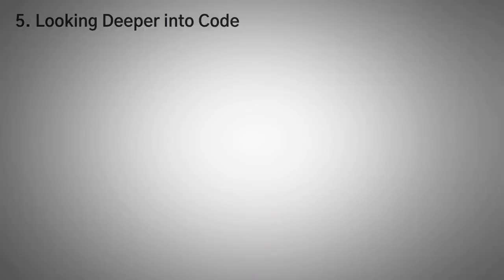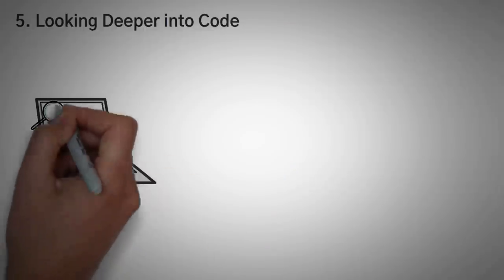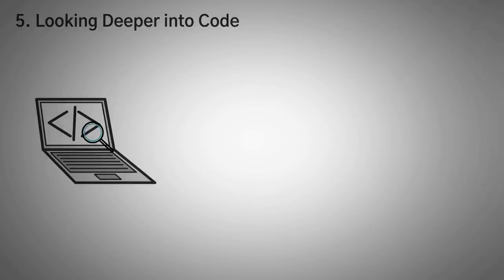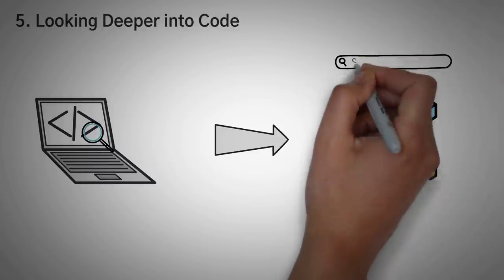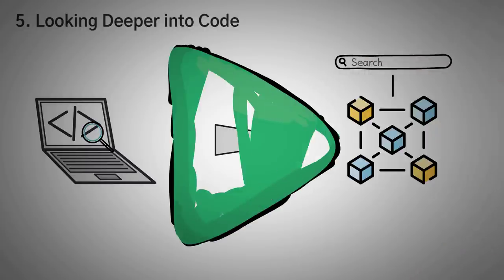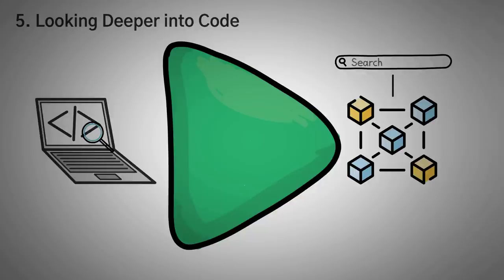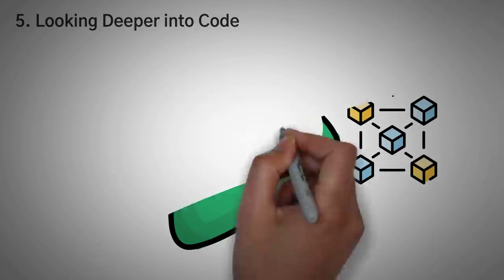Next up, number five is looking deeper into the code. One of the best ways to avoid a rug pull is simply to look at the code of the smart contract or the token code. Now there's many ways to do this, but the best way is to go to your favorite blockchain explorer and use the contract inspecting tool to—heck, what am I saying? This is supposed to be a simple explanation of how to spot a rug pull. You guys aren't going to do any of that. Lucky for you, I've got the hookup.